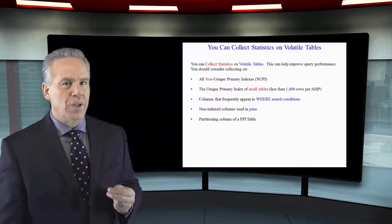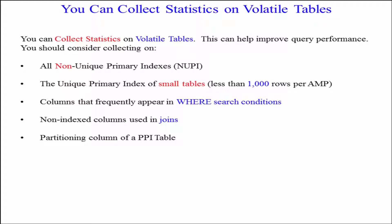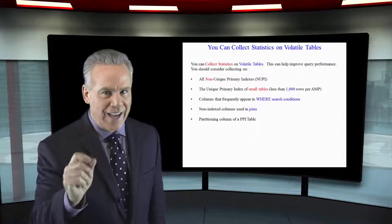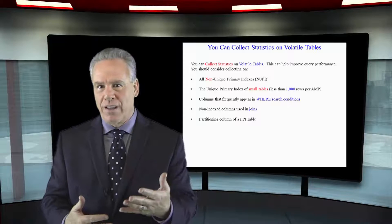What might you collect statistics on in a volatile table? All non-unique primary indexes, or non-unique secondary indexes, the unique primary index of small tables, columns that frequently appear in the WHERE clause — those WHERE clause columns — and non-index columns used in JOINs, like customer number equals customer number, and of course the partitioning column of all partitioned primary index tables that you might create with your volatile.